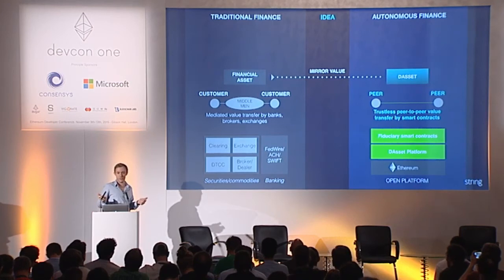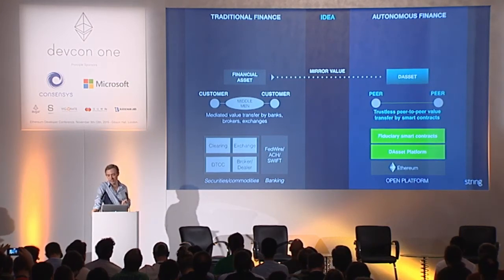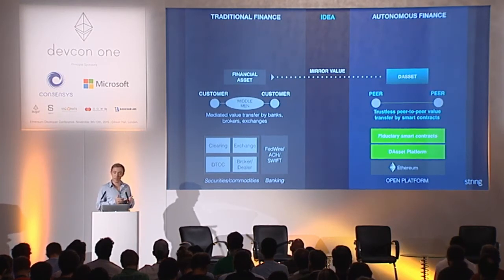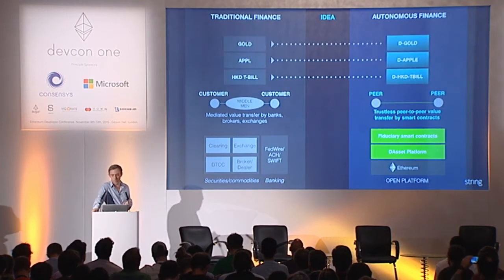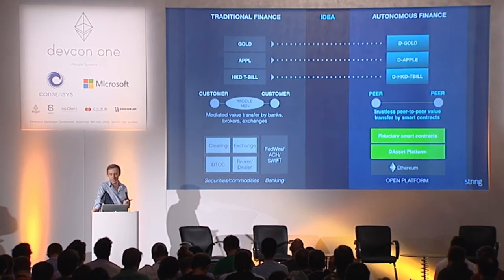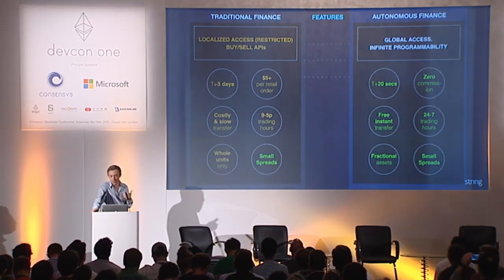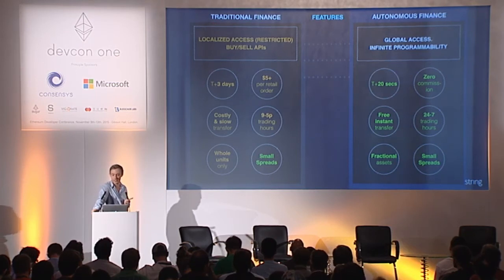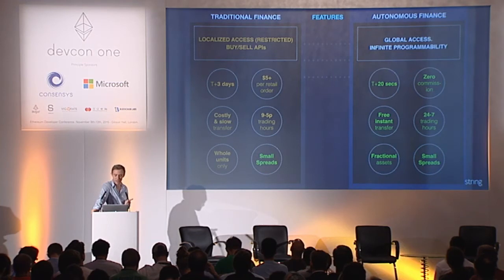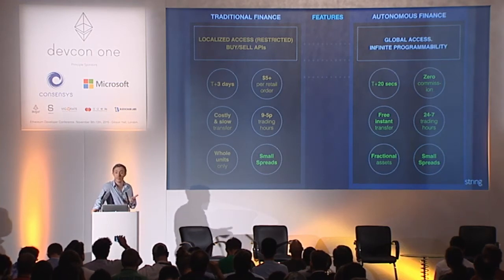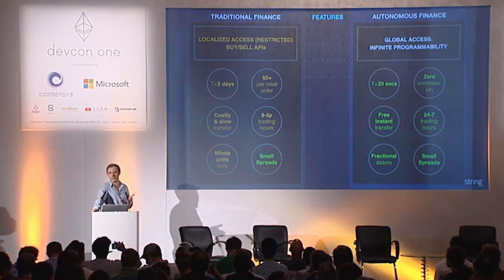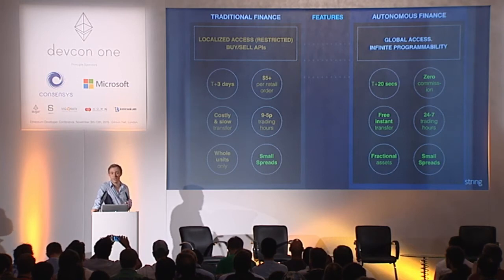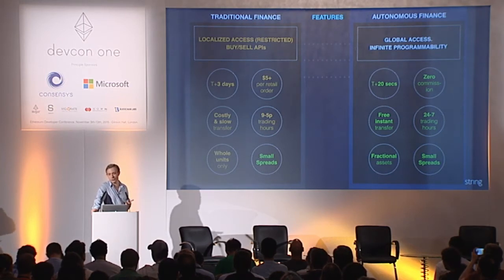What we'd like to do is have synthetic versions of real-world financial assets that mirror their value securely but can be traded peer-to-peer without middlemen. Rather than one-to-three days settlement time, we might get 20 seconds. We might get rid of commission completely. We might enable fractional assets — for example, if you're in a BRICS country and can't afford $650 for a Google stock, you could buy 0.05 of a share.